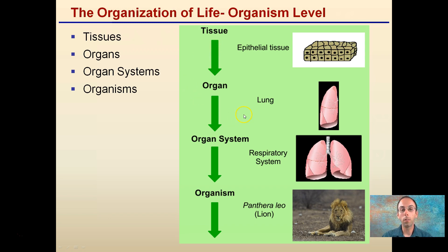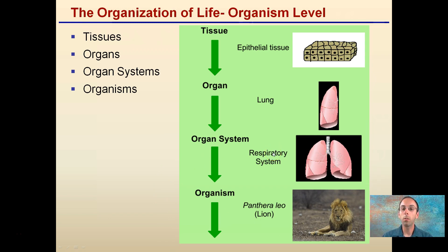Those tissues combine to form an organ, such as the lung. We then have an organ system, such as the respiratory system. And those organ systems can then make an organism, such as the lion here. It has respiratory, digestive, reproductive systems, and many more that come together to make the organism.